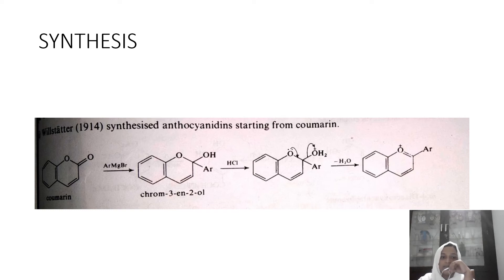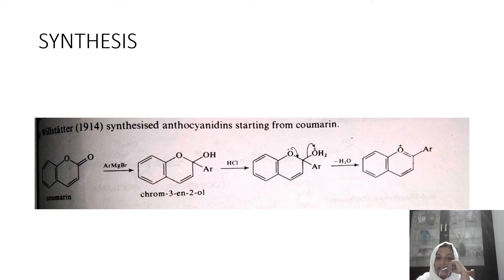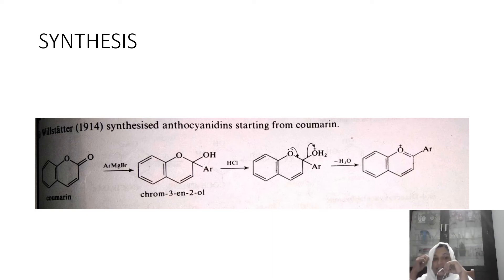This is the Windstater synthesis of anthocyanins, starting from coumarin. Coumarin is a compound consisting of a 5-membered ring fused with an oxygen-containing 6-membered ring. In the presence of a Grignard reagent and HCl, H2O is eliminated and anthocyanidins are formed. This is the symbol synthesis.